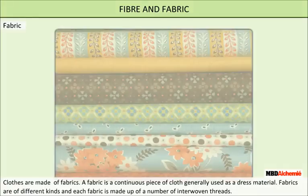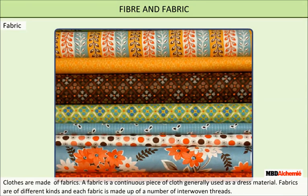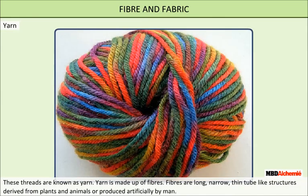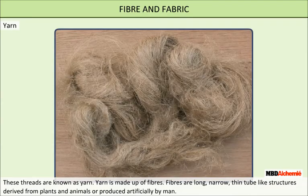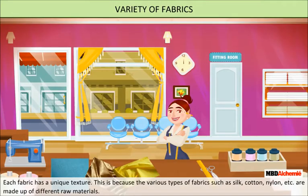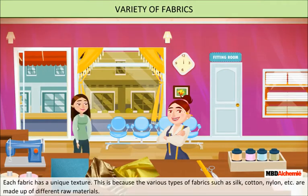Fiber and fabric: clothes are made up of fabrics. A fabric is a continuous piece of cloth generally used as a dress material. Fabrics are of different kinds, and each fabric is made up of a number of interwoven threads. These threads are known as yarn. Yarn is made up of fibers. Fibers are long, narrow, thin tube-like structures derived from plants and animals or produced artificially by man.